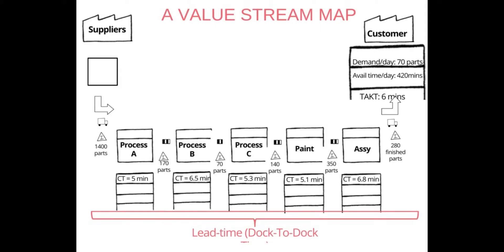We've got suppliers on the left and the processes that are used to transform the parts through the factory: Process A, B, C, and paint, then assembly, then finished goods, then they're shipped to the customer.